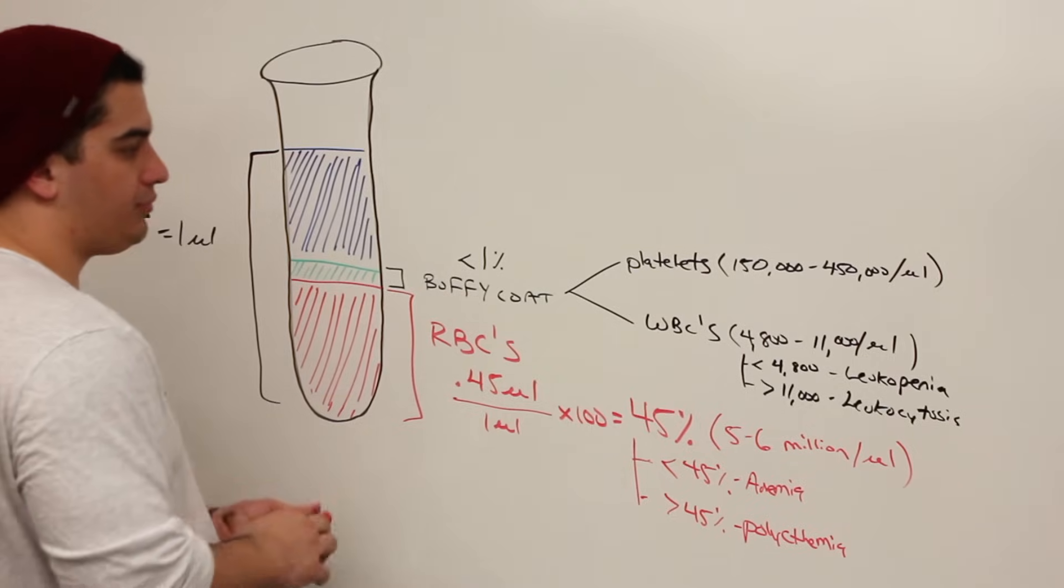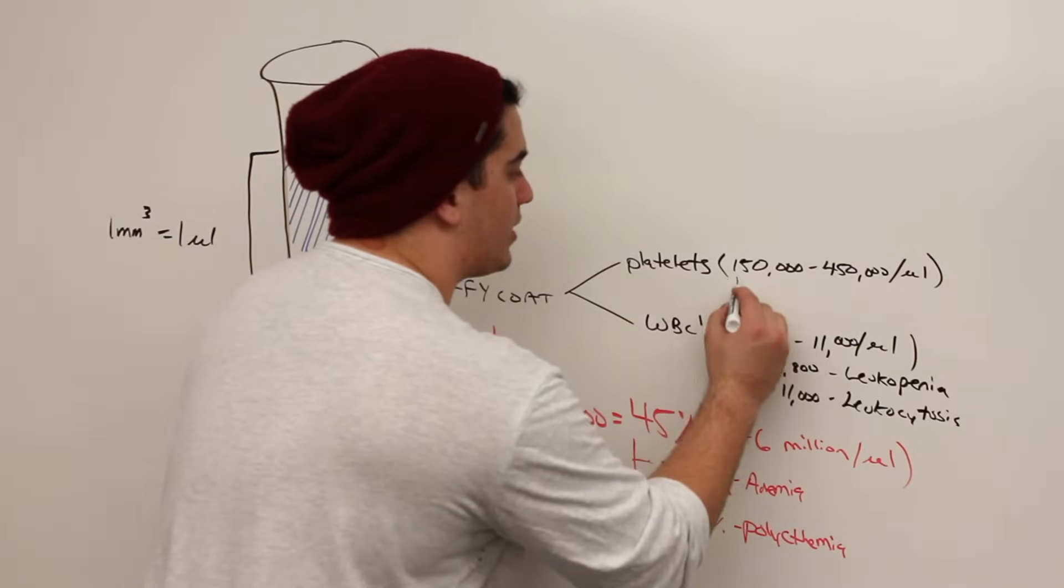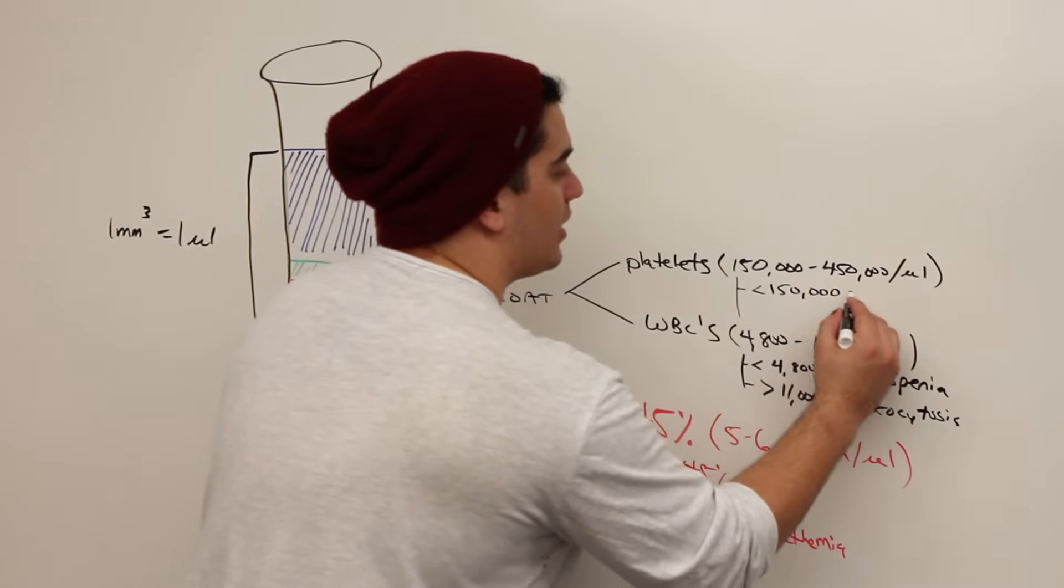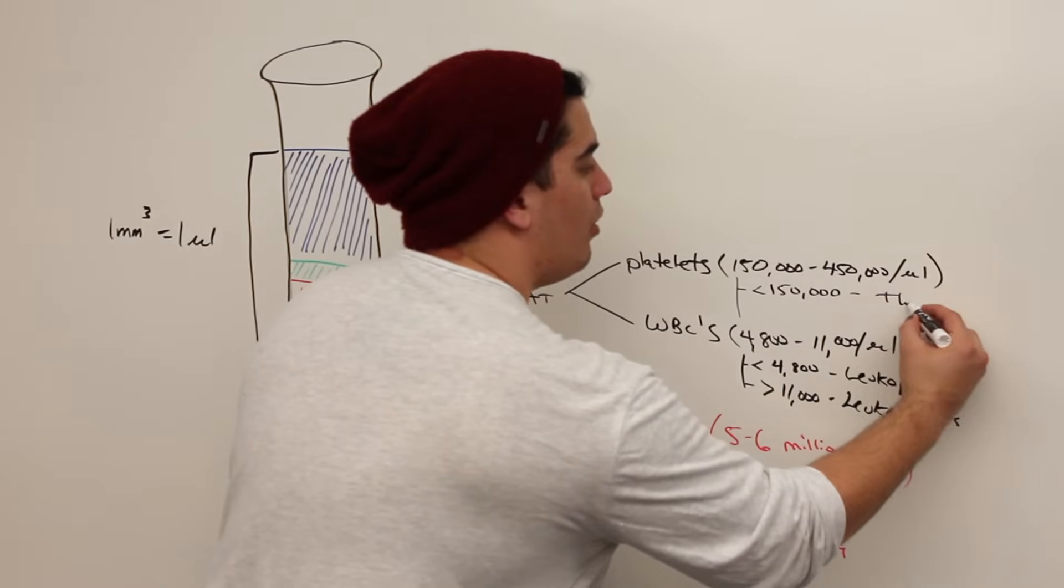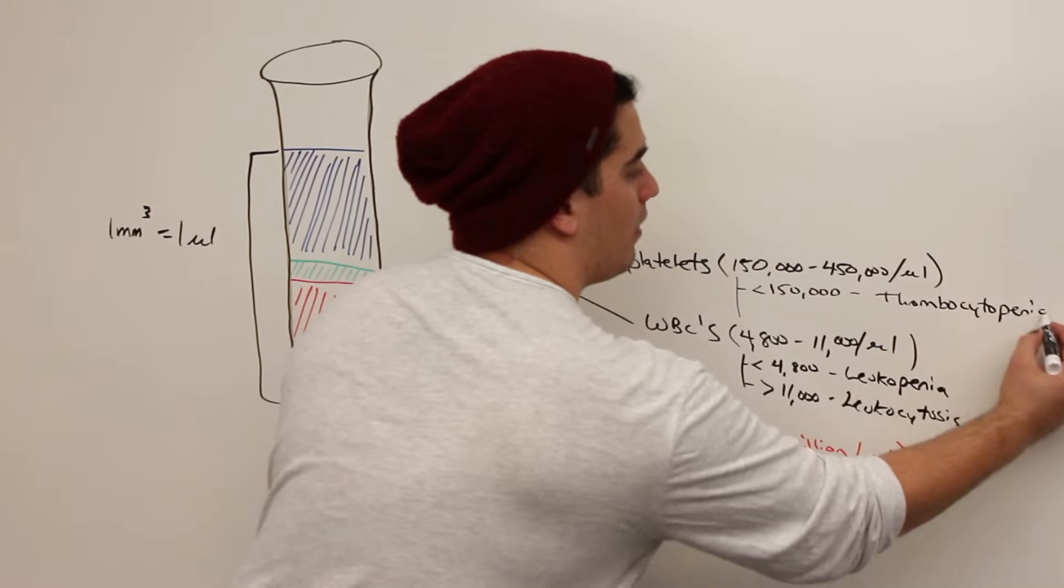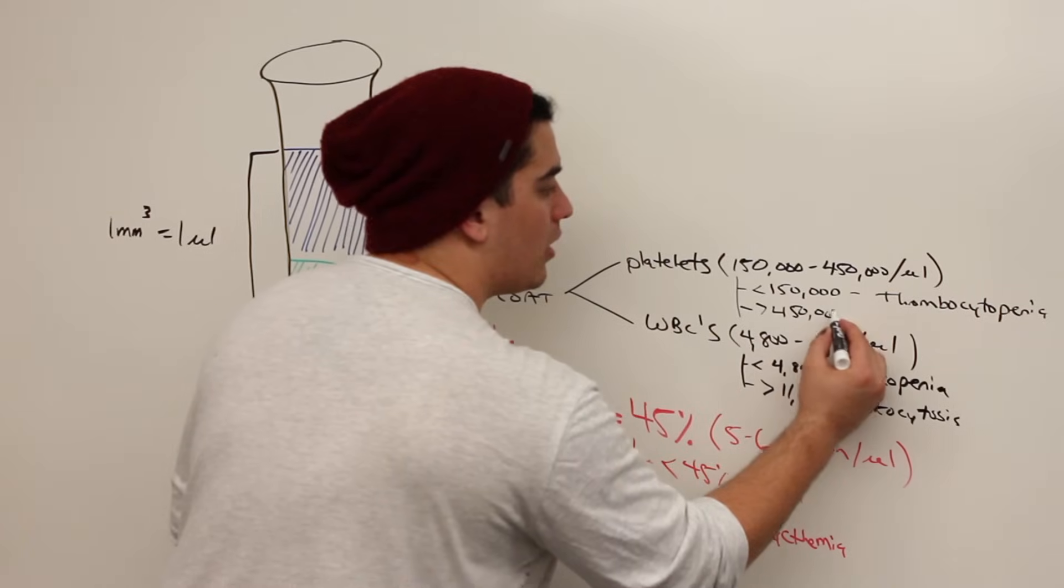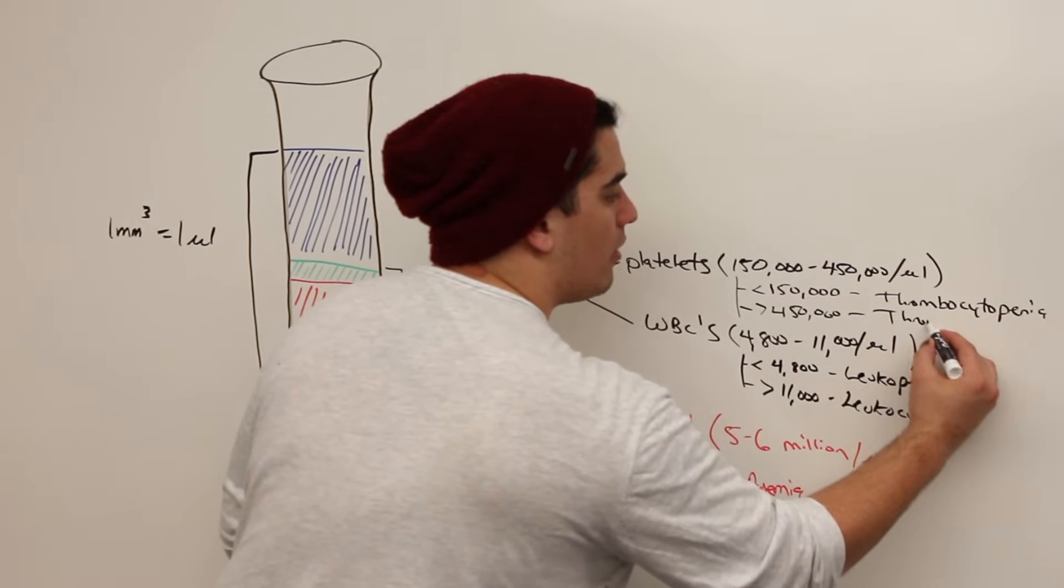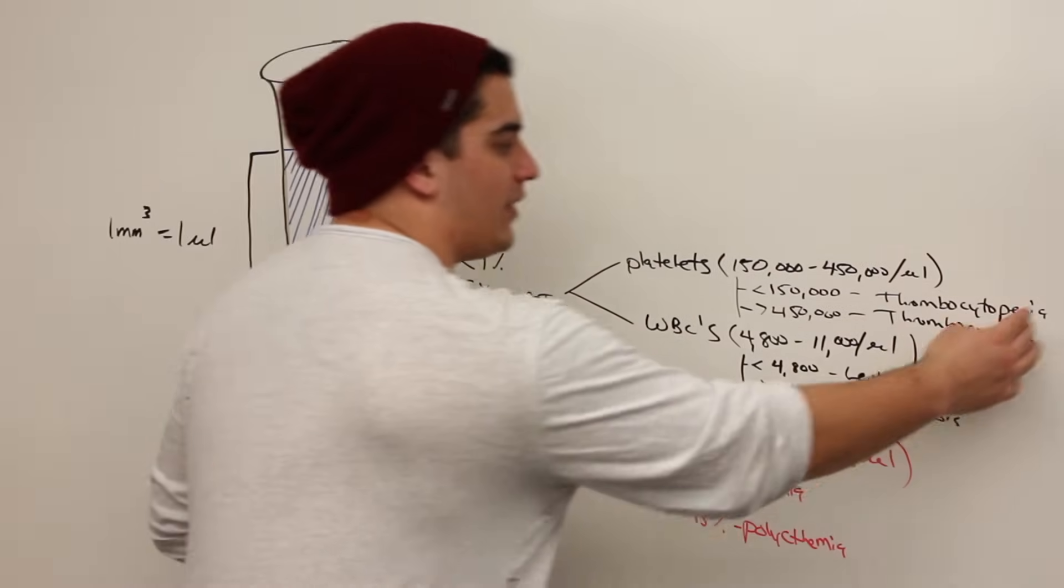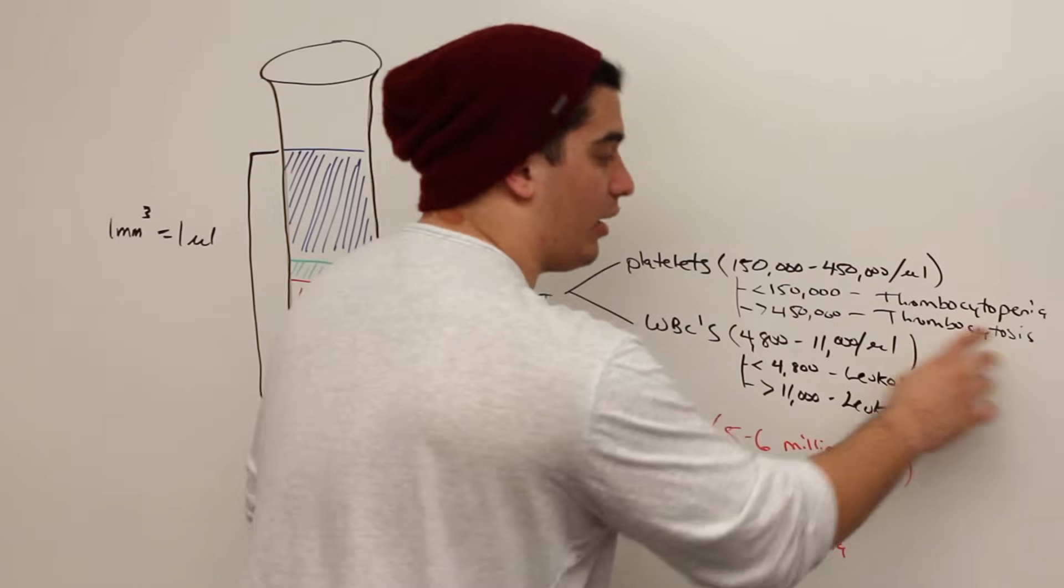Now, platelets, if you have less than 150,000 for platelets, this is called thrombocytopenia. And if you have greater than 450,000, this is called thrombocytosis. So thrombocytopenia, obviously you would have increased chances of bleeding; thrombocytosis, you'd actually have more clotting formation.